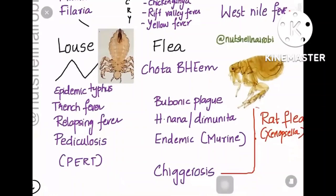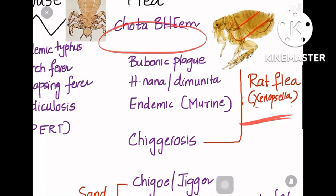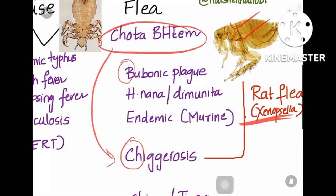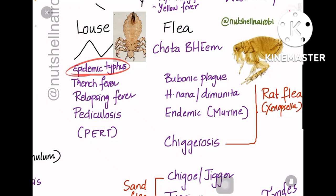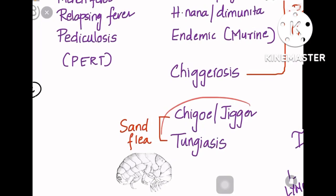For flea, the mnemonic is 'Chota Beam.' The rat flea is called Xenopsylla. CH is for chigurosis, B is for bubonic plague, H is for Hymenolepis nana or diminuta, and EN is for endemic (murine) typhus — remember, epidemic typhus was completed under louse; here comes endemic or murine typhus. Another type is sand flea, which causes two diseases: jigger and tungiasis.